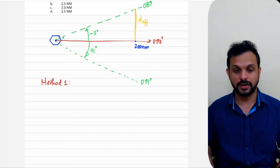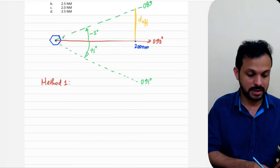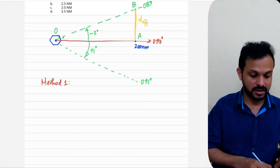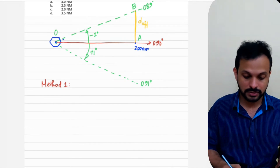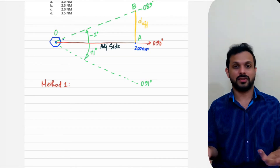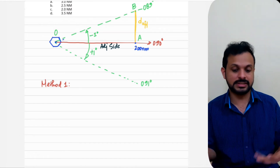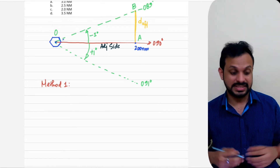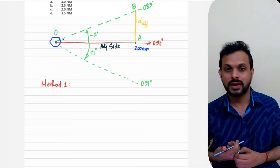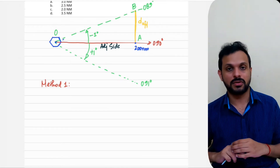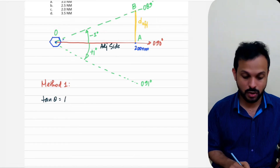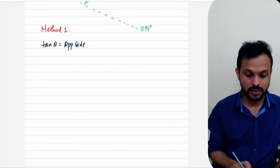In Method 1, we'll use basic trigonometry to find the cross-track error. Looking at the triangle — let me name it triangle OAP — using trigonometry, the adjacent side is 200 nautical miles and the opposite side is the distance off, which is what we need to find. The trigonometric function connecting the opposite and adjacent sides is the tan function. Tan theta equals opposite side divided by adjacent side.